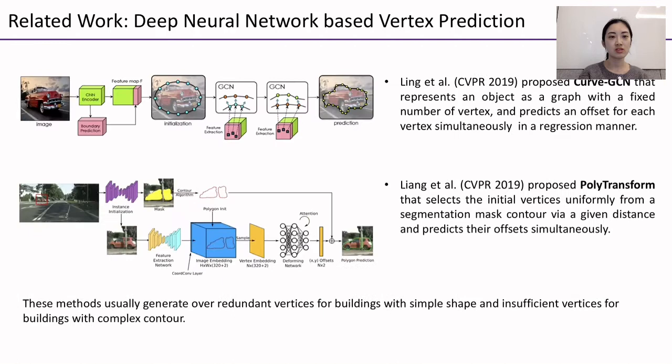Several other vertex-based methods predict an offset for each vertex simultaneously in a regression manner. The initial vertices are selected uniformly from an initialization with a fixed number of vertices, such as CurvedGCN, or from a segmentation mask contour via a given distance, such as PolyTransform. These methods usually generate over-redundant vertices for buildings with simple shapes and insufficient vertices for buildings with complex contour.